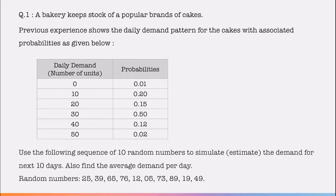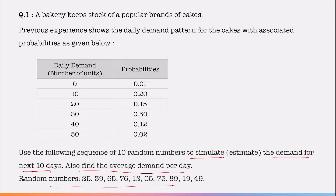Using the given random numbers, we have to simulate the demand for the next ten days. Remember this point: simulation means estimation or forecasting for the future. By using these ten random numbers mentioned below the question, we have to find out how much demand will occur in the next ten days. They also ask us to find out the average demand per day.